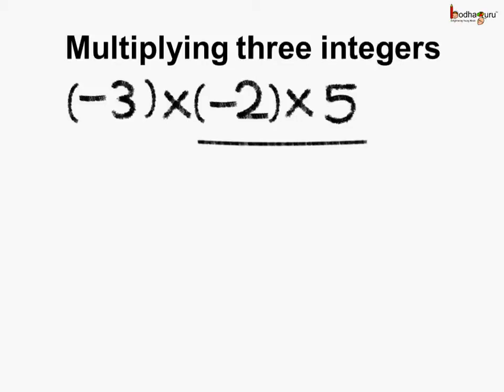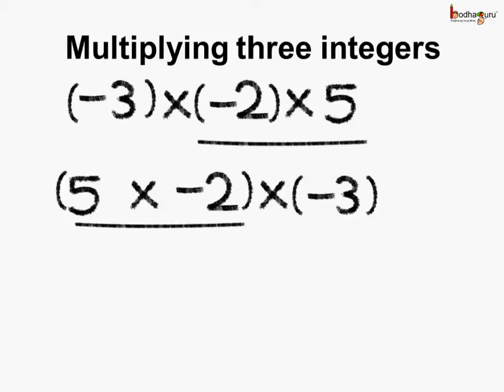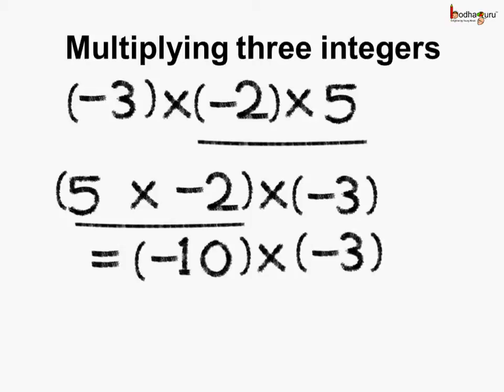Now let's take the group of minus 2 and 5 first and multiply. So we get 5 multiplied by minus 2, then we multiply it by minus 3. 5 multiplied by minus 2 would be 10 with a negative sign, so this equals minus 10 multiplied by minus 3. Here we have two negative integers, so the answer would be a positive integer: 3 multiplied by 10, and the answer is 30.